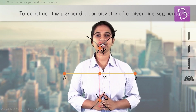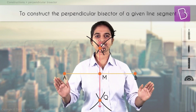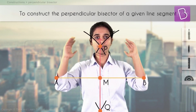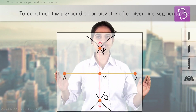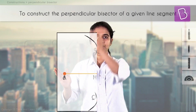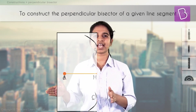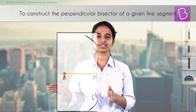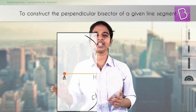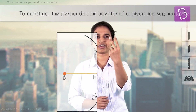Why is this the perpendicular bisector? Let's first understand visually. Put this on a piece of transparent paper and then fold it. When you fold it along the perpendicular bisector, you will see that AM and BM coincide perfectly with each other — that's why this is the perpendicular bisector.